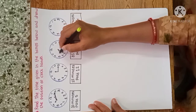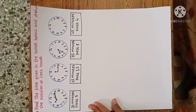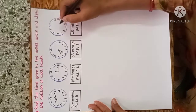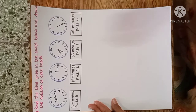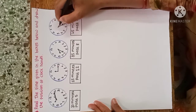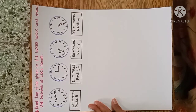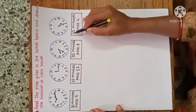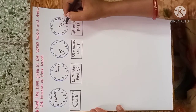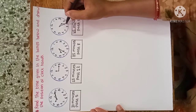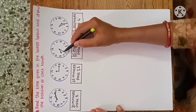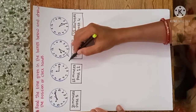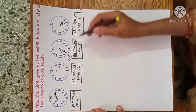Next: 25 minutes past four — 25 minutes means the minute hand is on five, and past four means the hour hand is in between four and five. Next: 35 minutes past eight — draw the minute hand on seven for 35 minutes, and the hour hand between eight and nine.